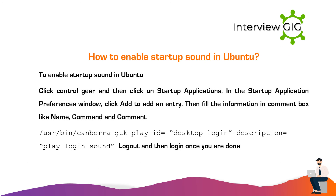How to enable startup sound in Ubuntu: Click the control gear and then click on Startup Applications. In the Startup Application Preferences window, click Add to add an entry. Then fill in the information in the fields: name, command, and comment.